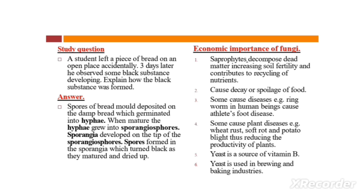Number four: some cause plant diseases — for example, wheat rust, soft rot, and potato blight — thus reducing the productivity of plants. Number five: yeast is a source of Vitamin B.